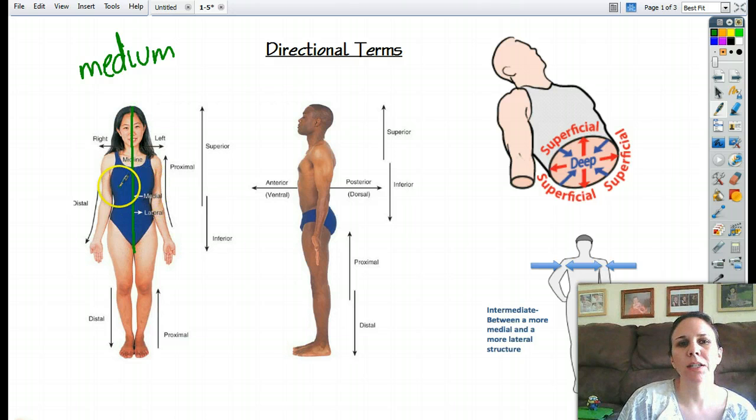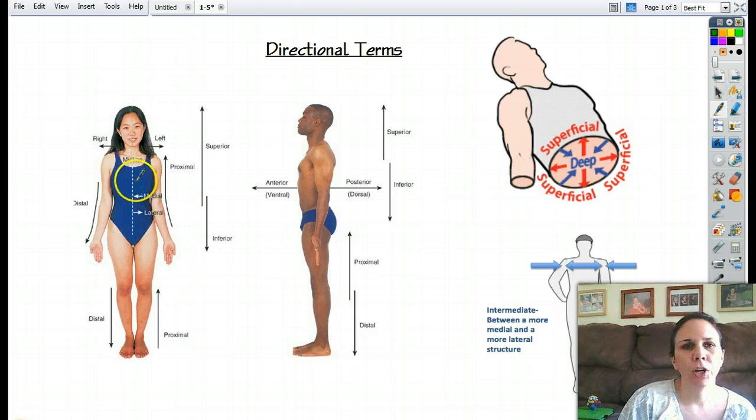that means anything closer to the middle is medial. So I could say that her appendix is medial to her hip bone because it's more towards the middle. I could say her heart is more medial to her lung,